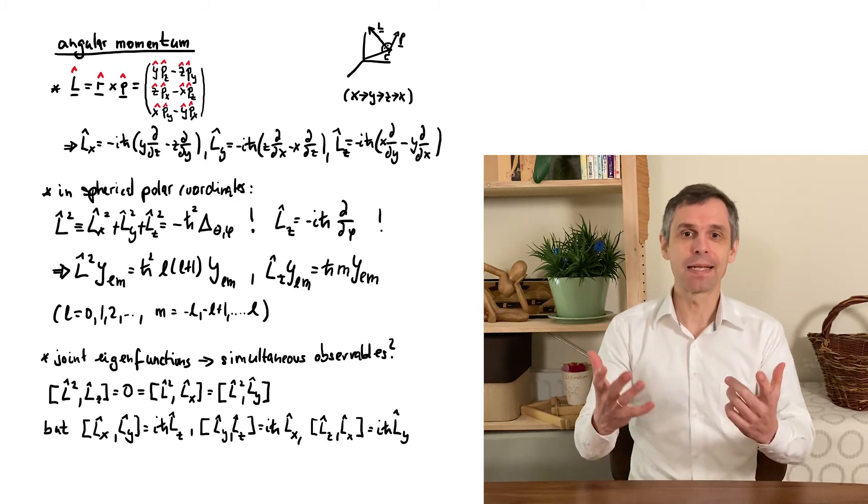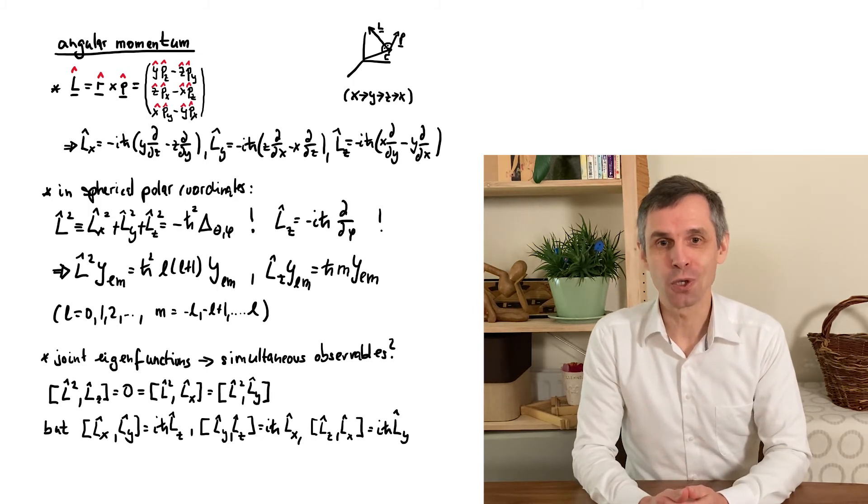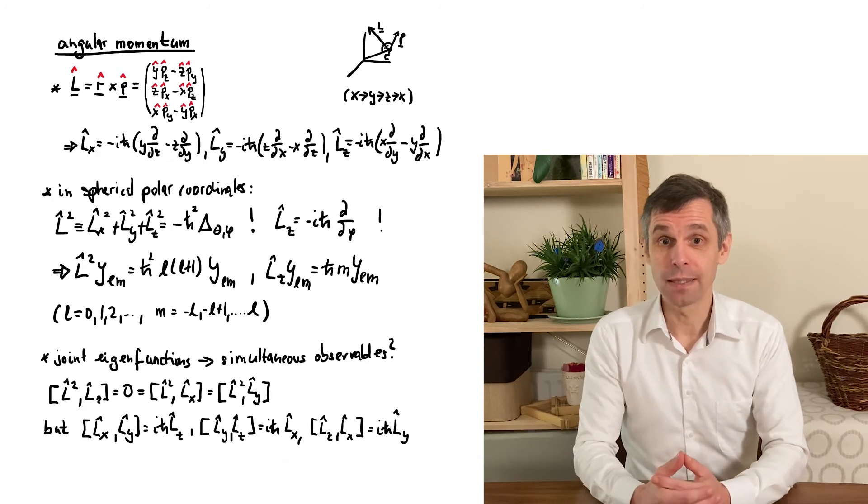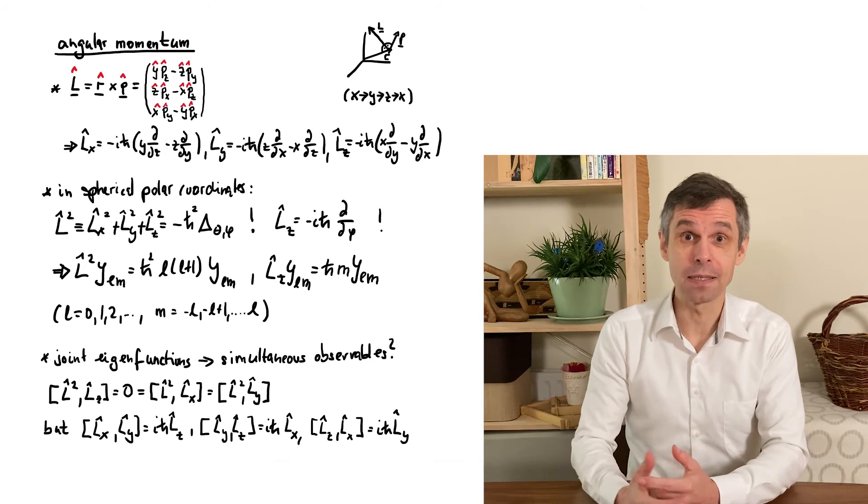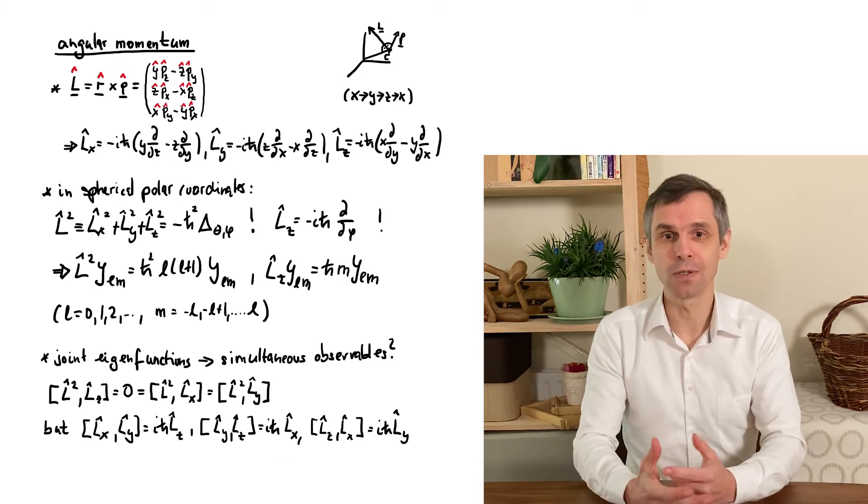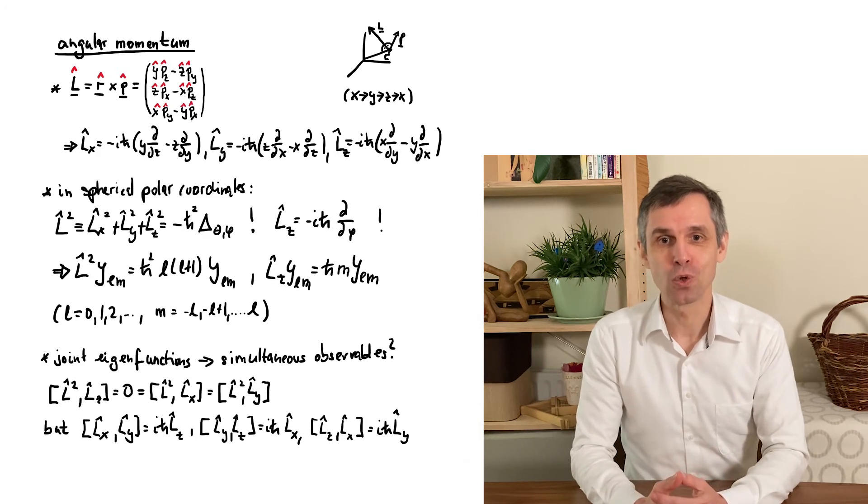Now, this means that there aren't any states in which more than one of the three components are well defined. And indeed, if you rotate the spherical harmonics to align them with the x or the y-axis, they become superpositions of the original spherical harmonics aligned with the z-axis. So they are no longer an eigenstate of Lz.